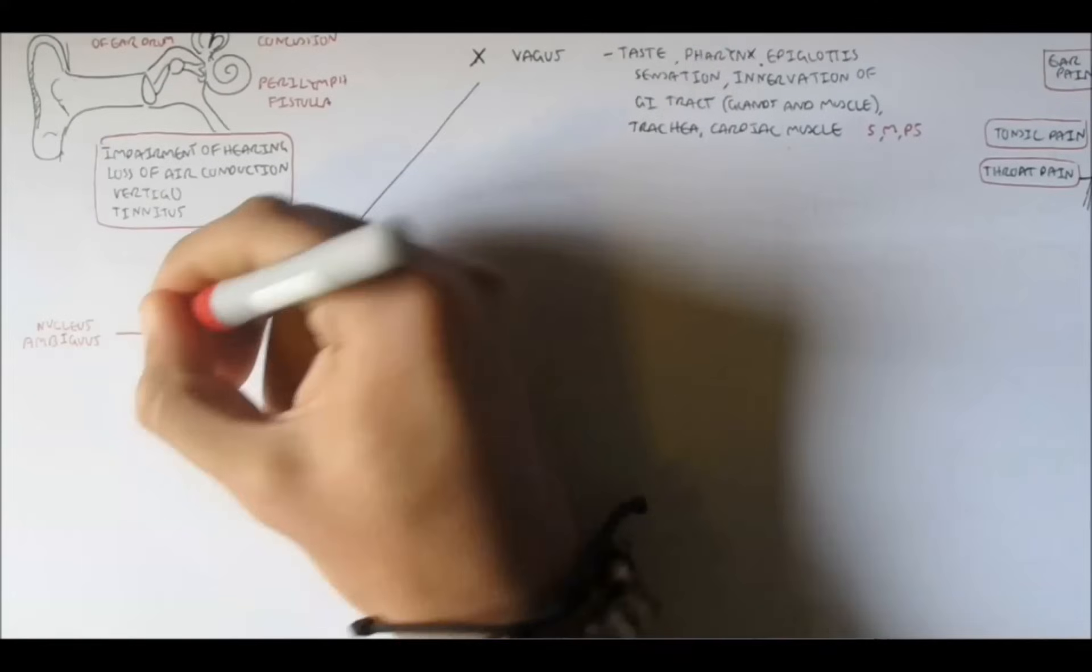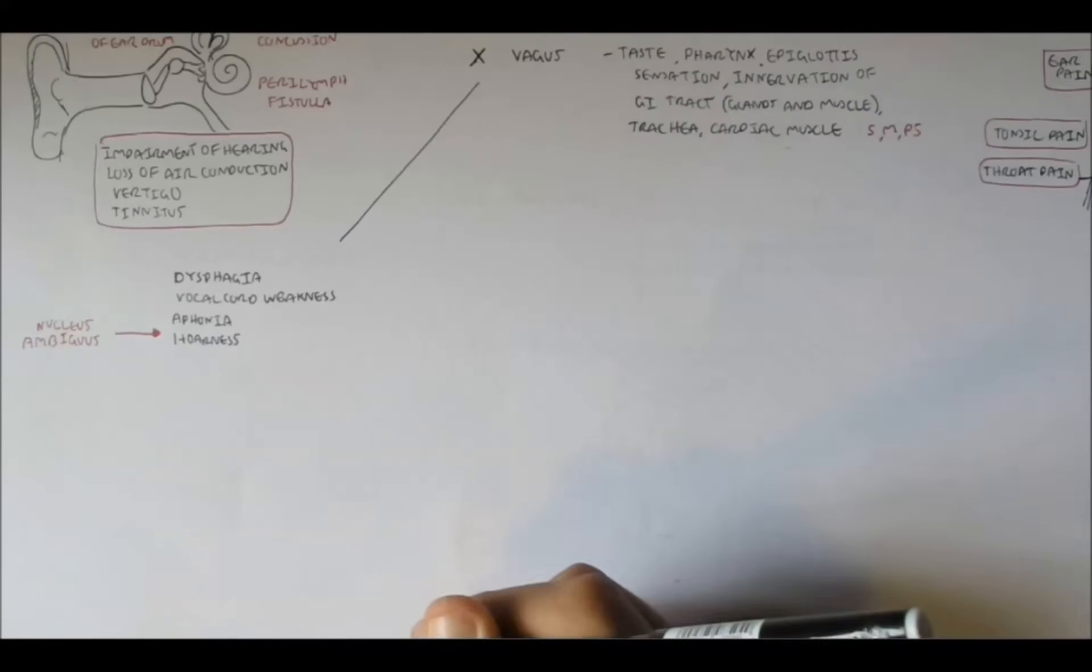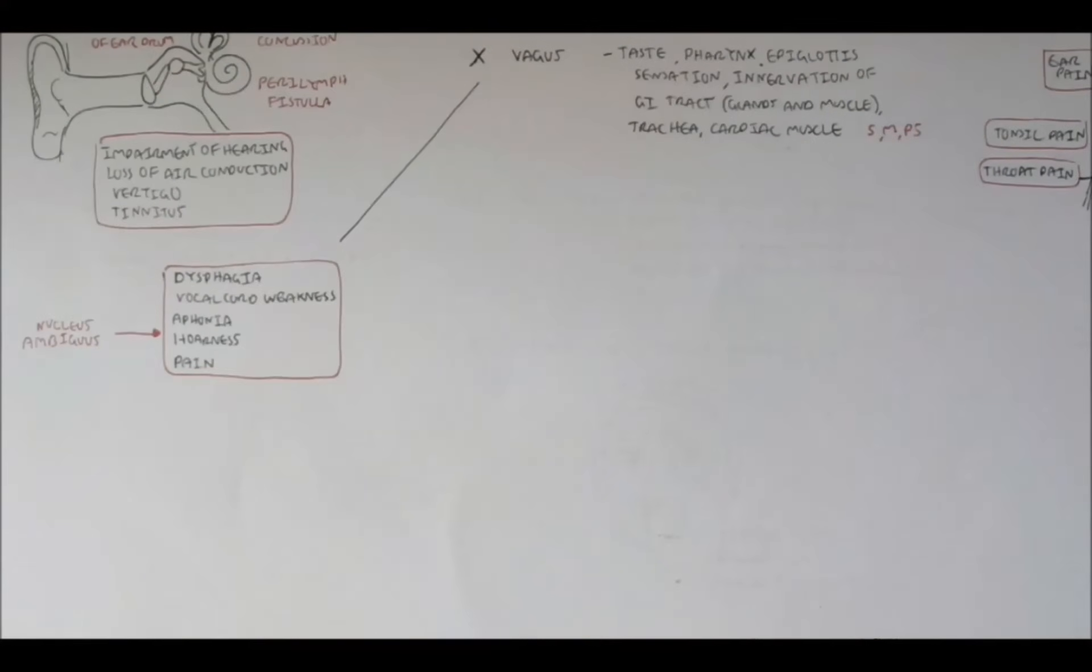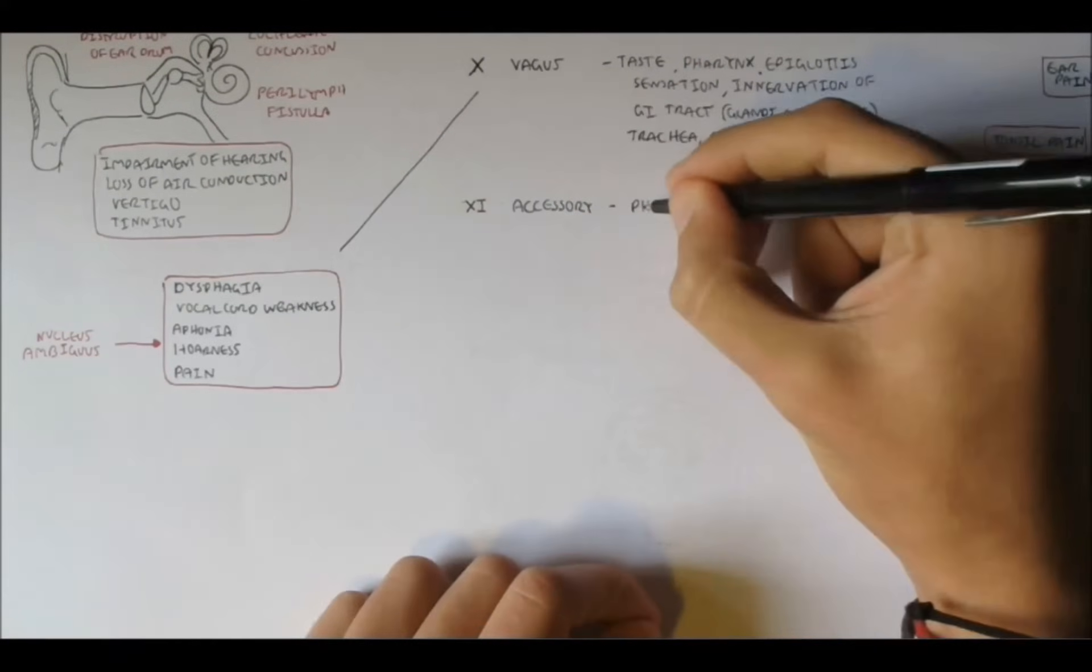It can damage the nucleus ambiguus, which is the nuclei that receives this nerve, and also for a few other cranial nerves. And it can cause aphonia, the inability to speak, and hoarseness, which means raspy, harsh voice. Damage to this nerve can also cause pain.